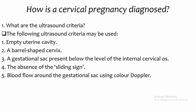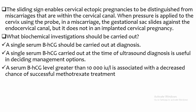How is a cervical pregnancy diagnosed? The following ultrasound criteria may be used: first, empty uterine cavity; second, barrel-shaped cervix; third, a gestational sac present below the level of the internal cervical os; fourth, absence of the sliding sign; and finally, blood flow around the gestational sac using color Doppler. The sliding sign enables cervical ectopic pregnancy to be distinguished from miscarriages within the cervical canal. When pressure is applied to the cervix using the probe in a miscarriage, the gestational sac slides against the endocervical canal, but this does not occur in cervical pregnancy.